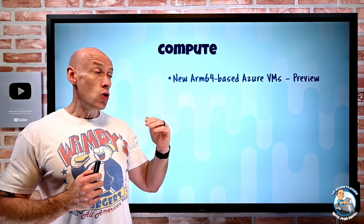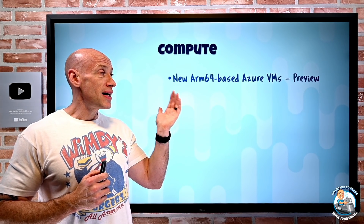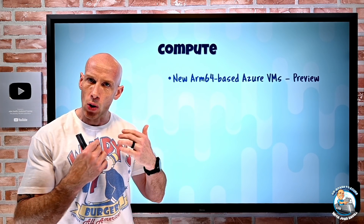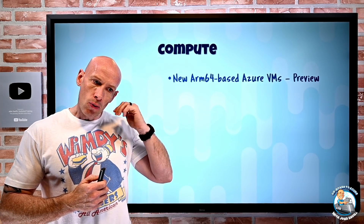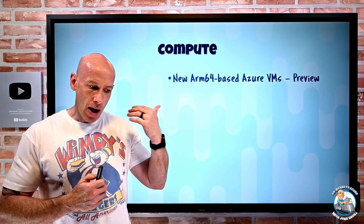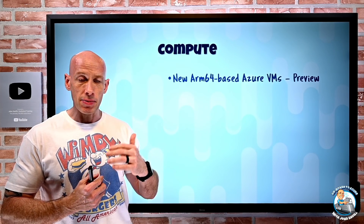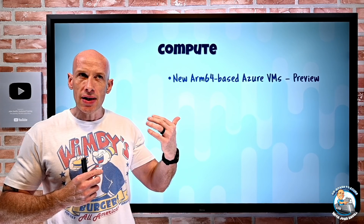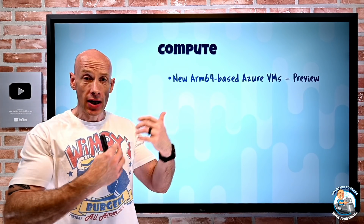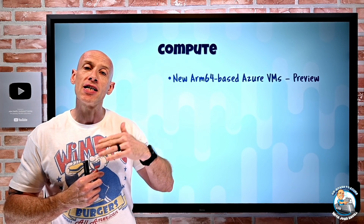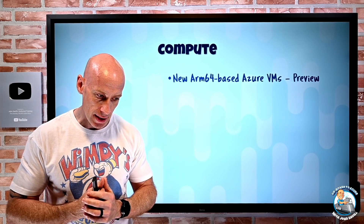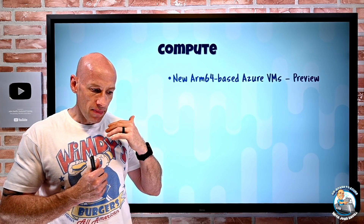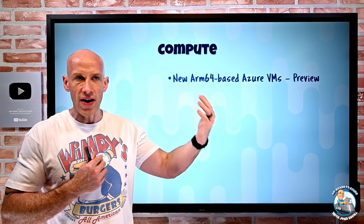On to the new updates. There are new ARM64-based Azure virtual machines in preview. Before this, we all had x86-based virtual machines. These are built on the Ampere Ultra ARM-based processors up to three gigahertz. Many operating systems can run on ARM today and generally you'll get a better price-performance ratio, as these are cheaper processors.